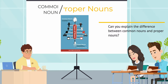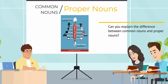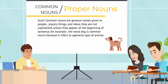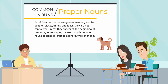Can you explain the difference between common nouns and proper nouns? Sure. Common nouns are general names given to people, places, things, and ideas. They are not capitalized unless they appear at the beginning of a sentence. For example, the word 'dog' is a common noun because it refers to a general type of animal.